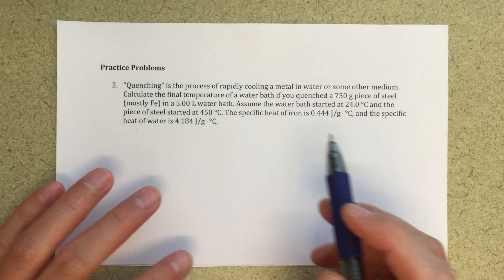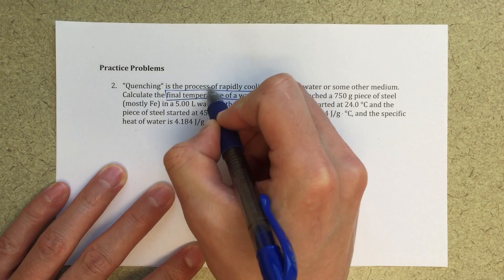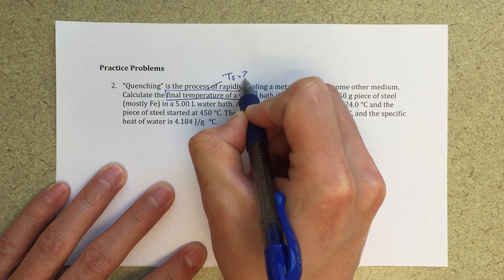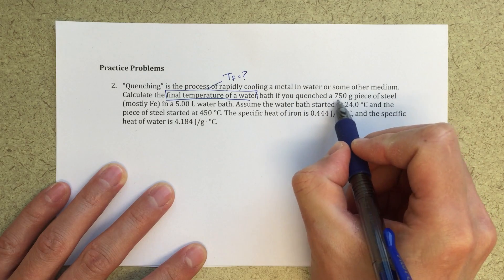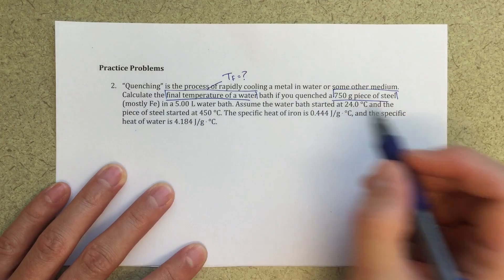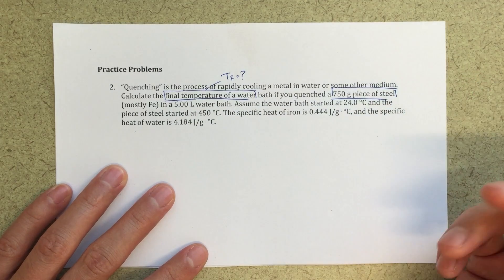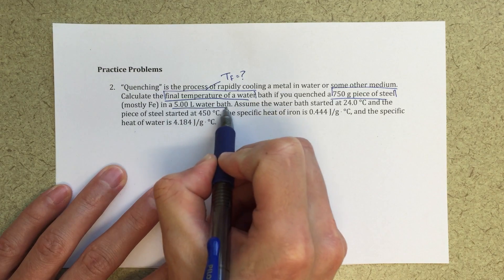What we're looking for is the final temperature of a water bath, so that's our end goal T final equals question mark. We have a 750 gram piece of steel—steel is essentially iron so it says mostly iron, so we're going to use the specific heat for iron when we solve this problem—in a 5 liter water bath, so we've got some amount of water as well.